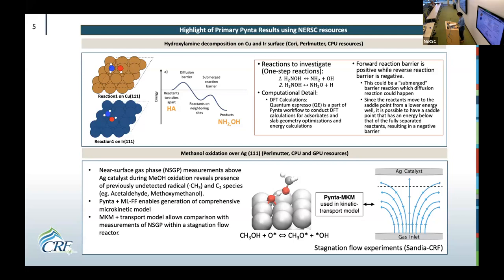We also used PINTA to investigate methanol oxidation over silver surfaces. This project is a nice combination of experiment and modeling — a collaboration between UC Davis and Sandia — and shows our effort to link VASP to PINTA utilizing CPU hours on Perlmutter. Near-surface gas-phase measurements above the silver catalyst during methanol oxidation revealed the presence of previously undetected radical and oxygenate species such as acetaldehyde and methoxymethanol. An ML-trained force field using DeepMD-kit with GPU Perlmutter hours was employed with PINTA to generate comprehensive microkinetic models using kinetic transport models. Results are being compared with stagnation flow experiments done at Sandia.